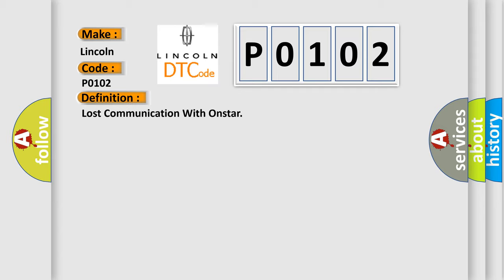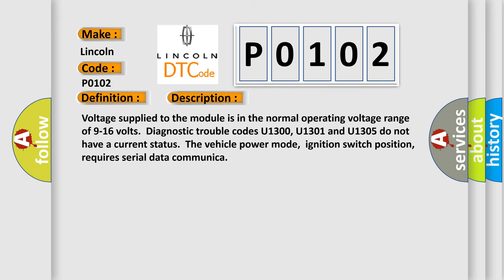And now this is a short description of this DTC code. Voltage supplied to the module is in the normal operating voltage range of 9 to 16 volts. The diagnostic trouble codes U1300, U1301, and U1305 do not have a current status. The vehicle power mode, ignition switch position, requires serial data communication.